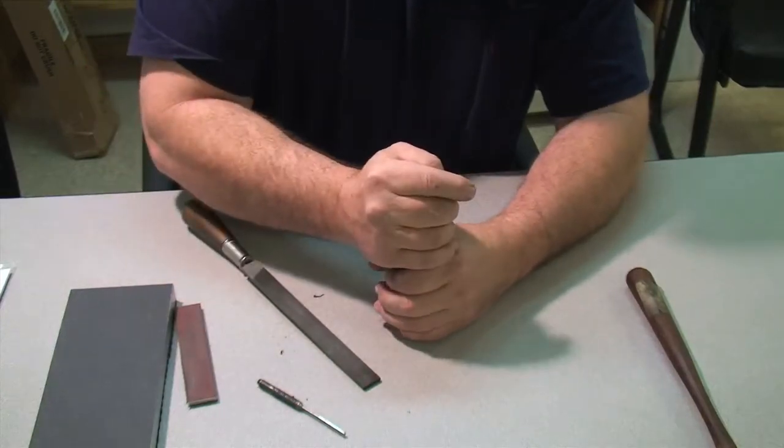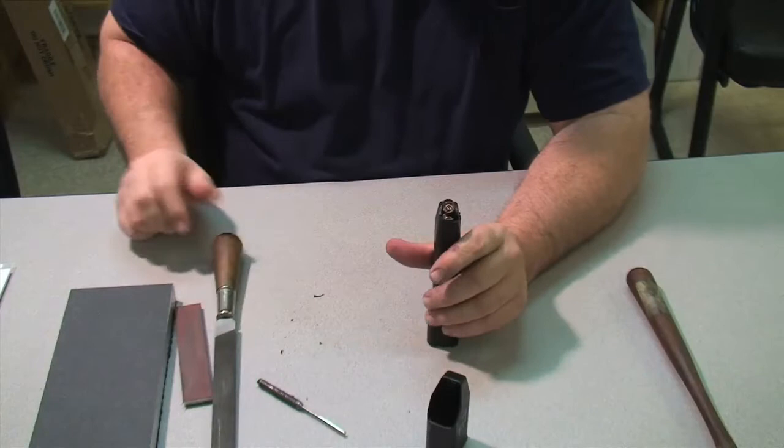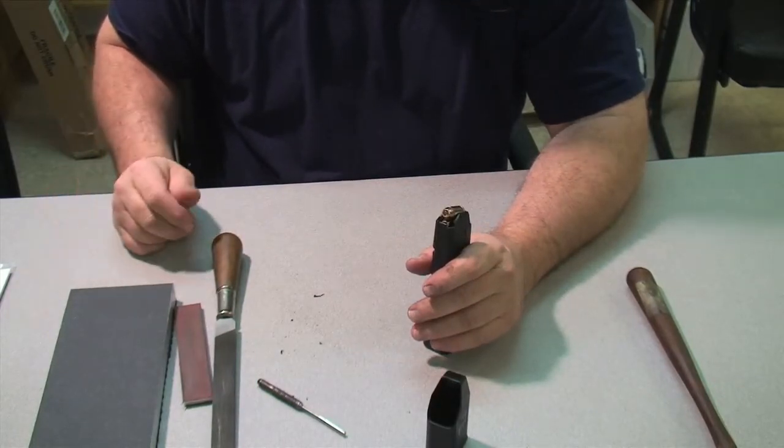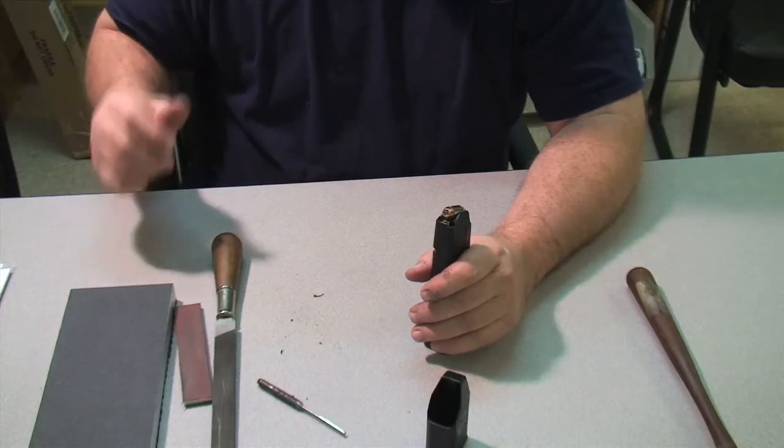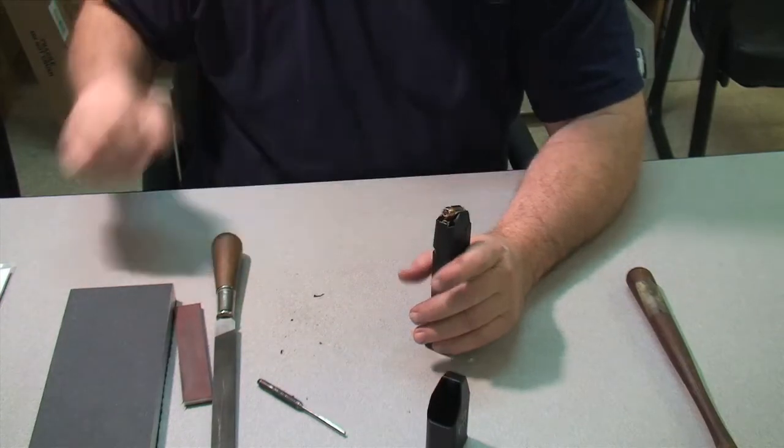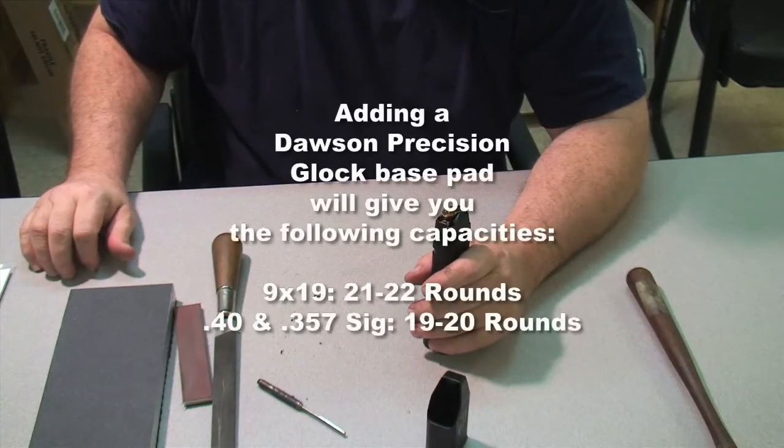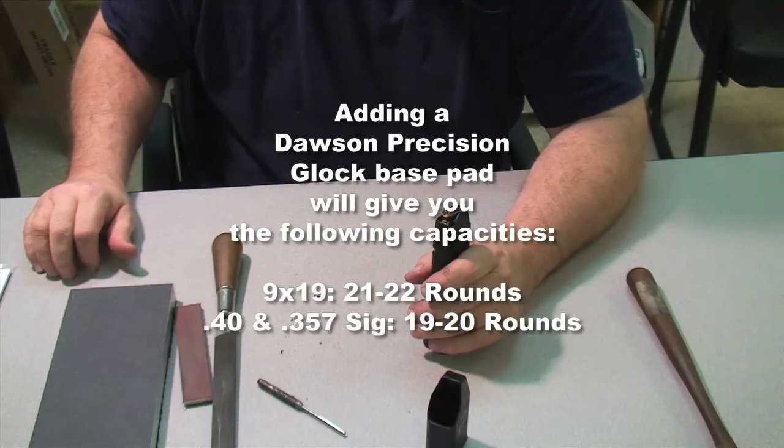Obviously you can see it's not a big deal. It takes about three minutes to prep a follower. And like I said, not all followers require prep, but if you put a Dawson Precision base pad on your Glock magazine and you're not getting the capacity that we advertise, then the odds are that the follower is impeding itself going through the tube to the base pad and we just need to prep that follower a little bit.